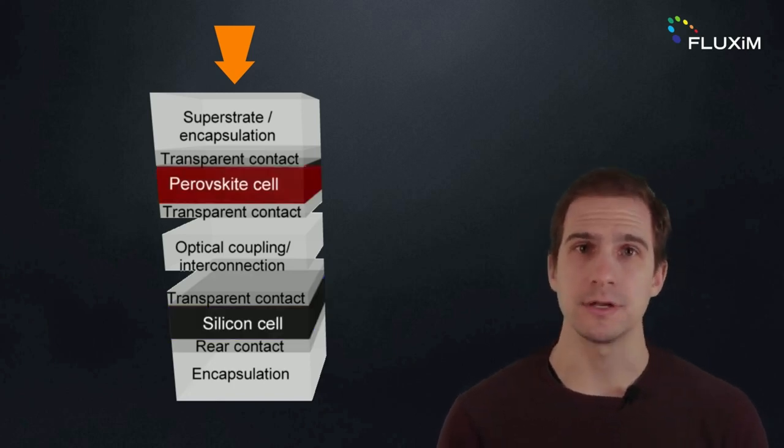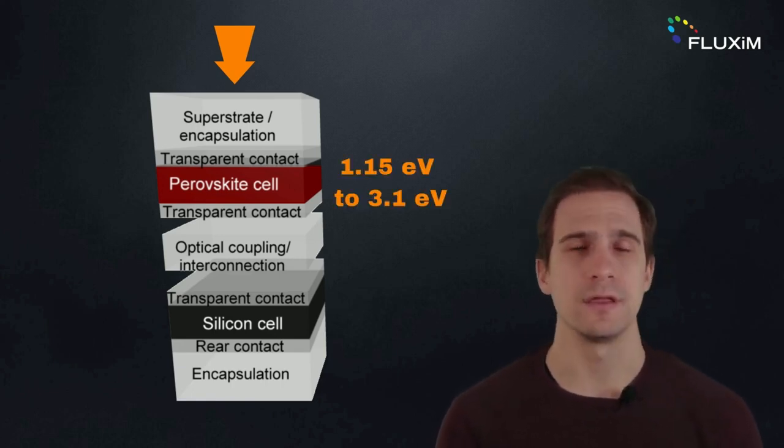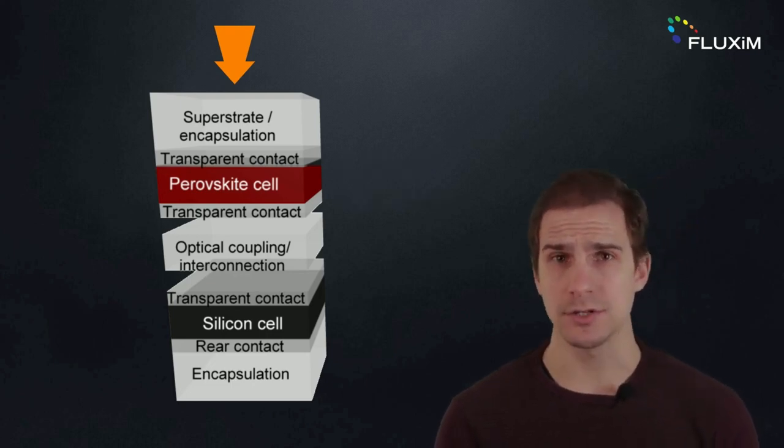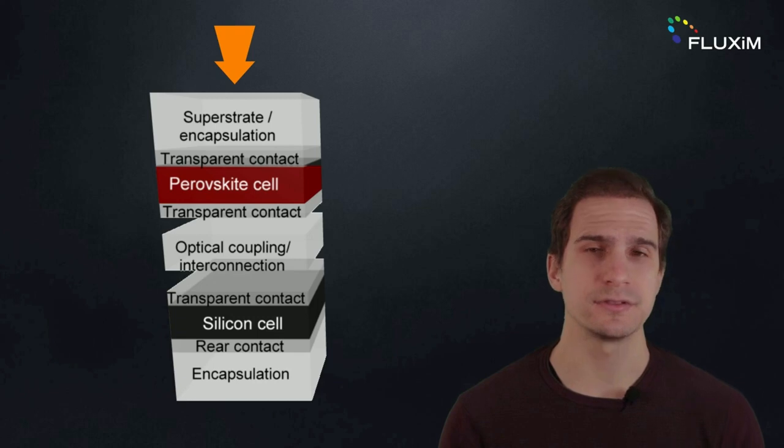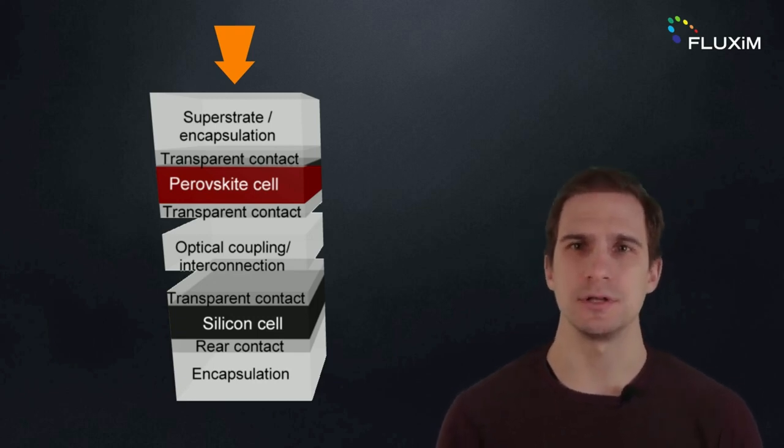Perovskites are a great material for the top cell, as they can easily be tuned to have a bandgap between 1.15 and 3.1 eV. They can be deposited at low temperatures with solution process methods like spin coating, avoiding any damage to the bottom cell during the fabrication of the two terminal solar cells.